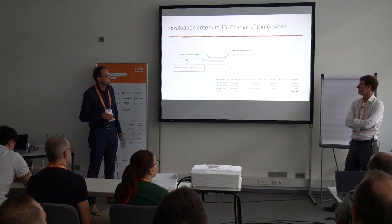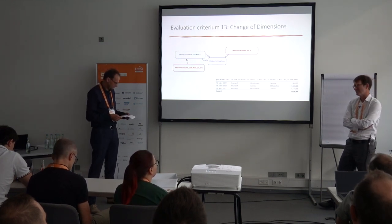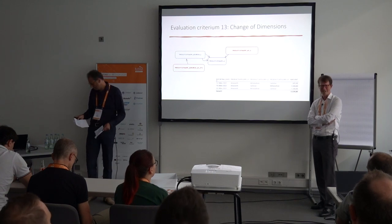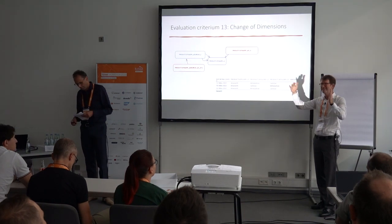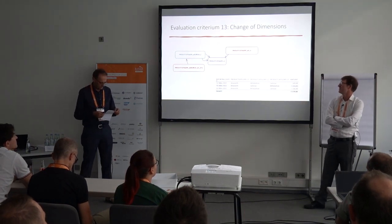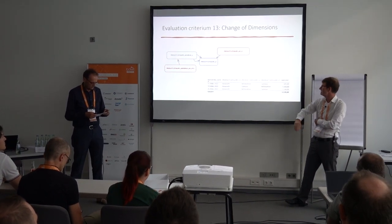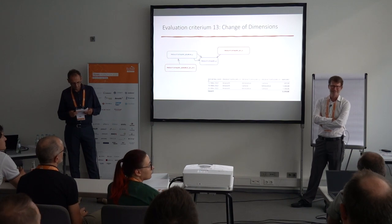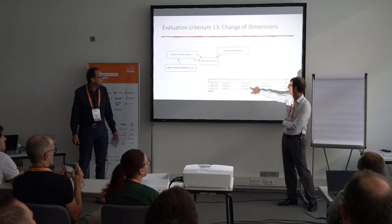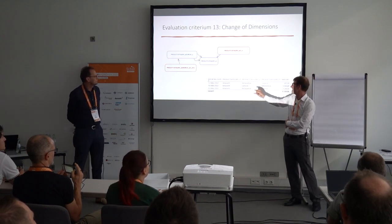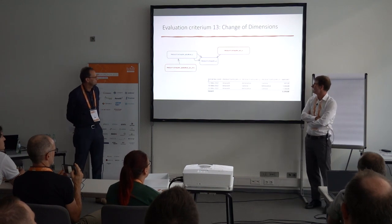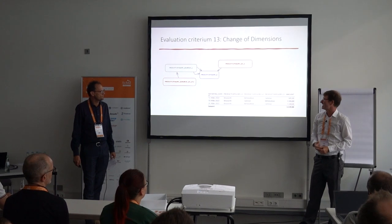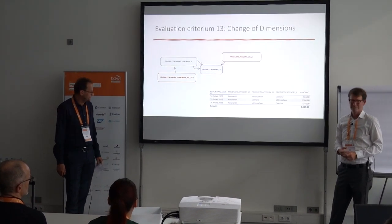Change of dimension: we received a product category table — a parent-child mapping table with a cat_id and uber-cat_id spanning several levels — with a complete change of the mapping between period one and period two of the delivery. Michael simplified the change a bit by just switching levels, but that's fine. The way we set it up was by defining a hierarchical link — a product hierarchy link — on top of the product category hub.